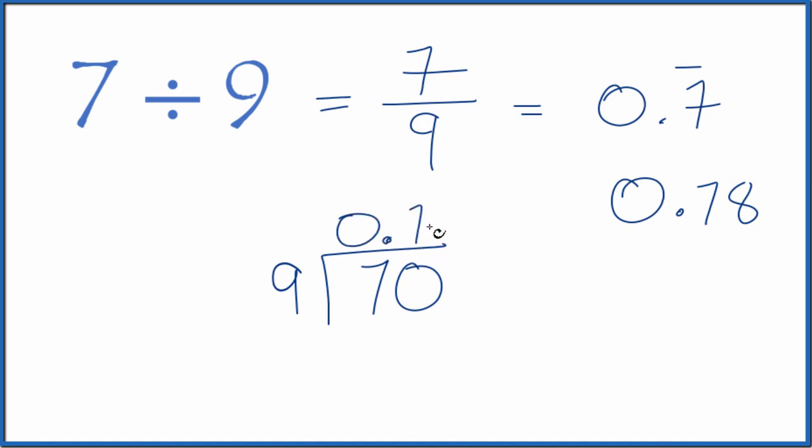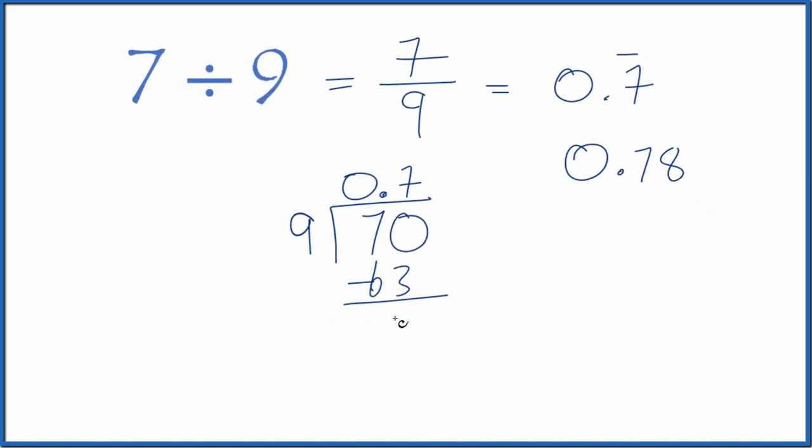So 7 times 9, that's 63. Subtract and we get 7. Call it 70, move over 1.